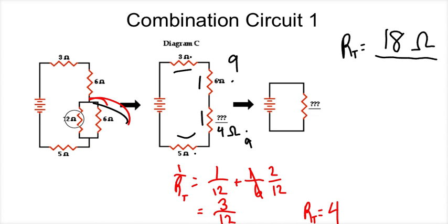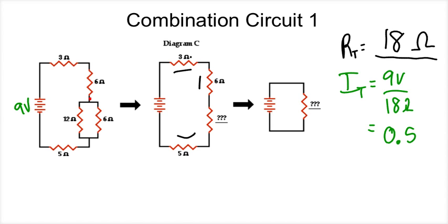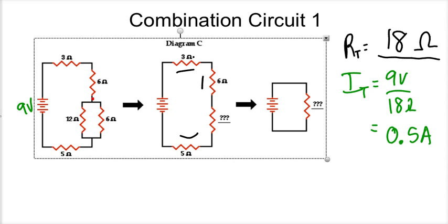Say we wanted to find the current in all of these. I'm going to show you guys how to do the current. So let's go ahead and find I total. I total is going to be whatever the voltage of the battery is. It wasn't given in this problem so we're just going to say it's 9 volts. That's pretty standard. 9 volts divided by 18 ohms. So it's 1 or 1 half. So we're going to say it's 0.5 amps. And that's the bell. I gotta go. So we have 0.5 amps of current coming out of the battery.